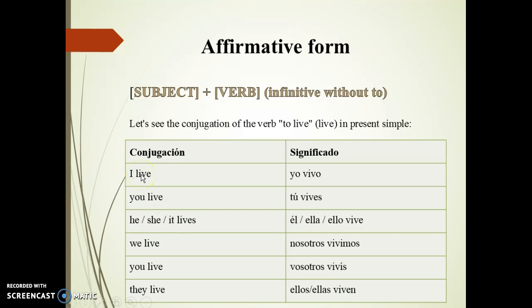If the subject is third person singular — in this case he, she, or it — an 's' is added to the verb. So: he lives, she lives, or it lives.